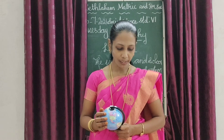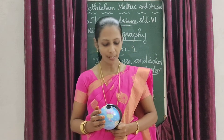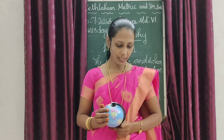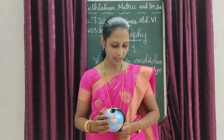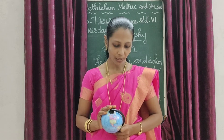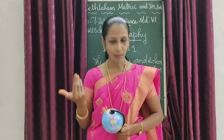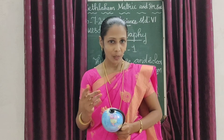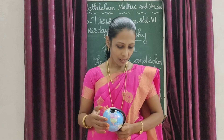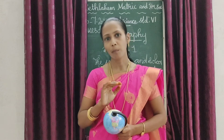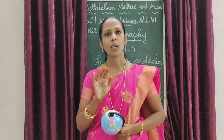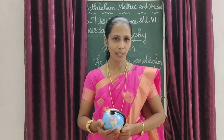Three-fourths of the earth is covered by water, which is why it appears blue. The earth is the only planet in the solar system which is not named after any Greek or Roman deity — all other planets are named after Roman or Greek gods.